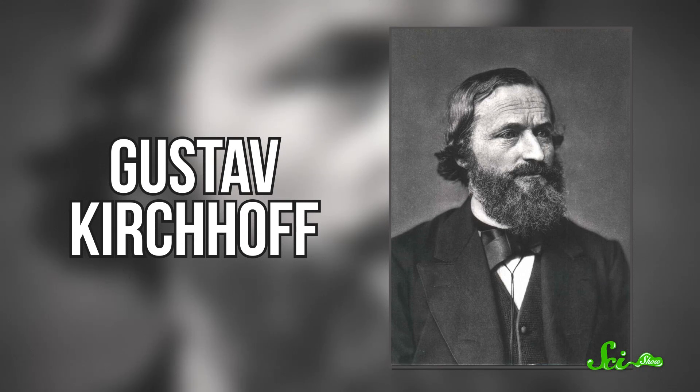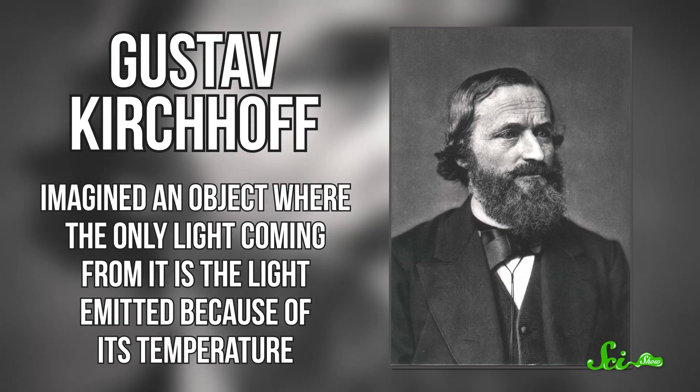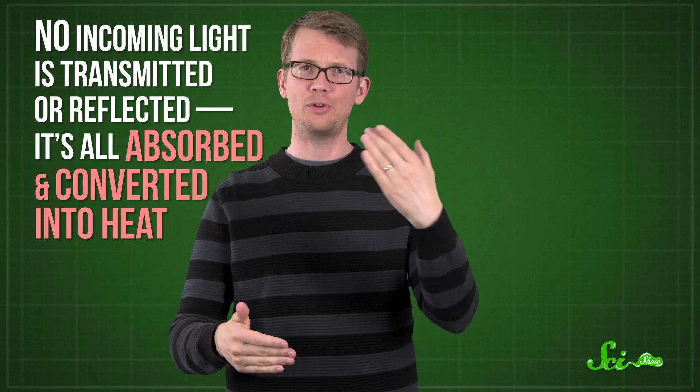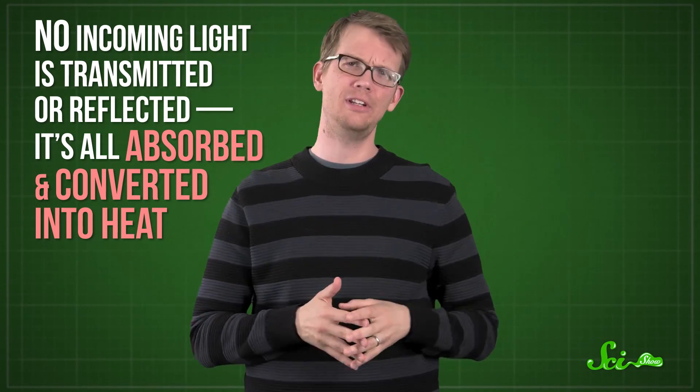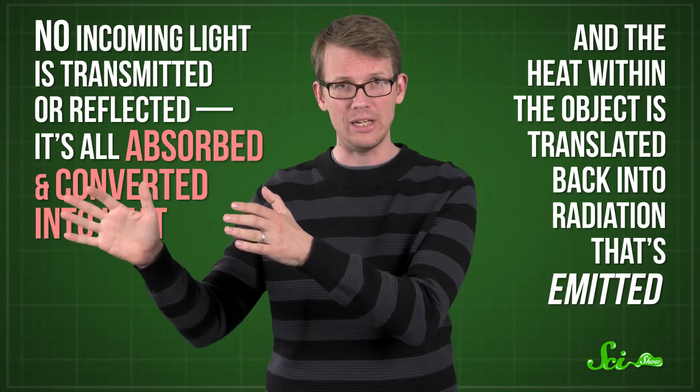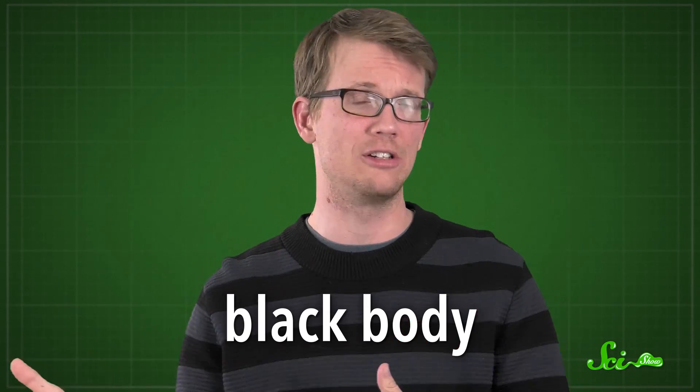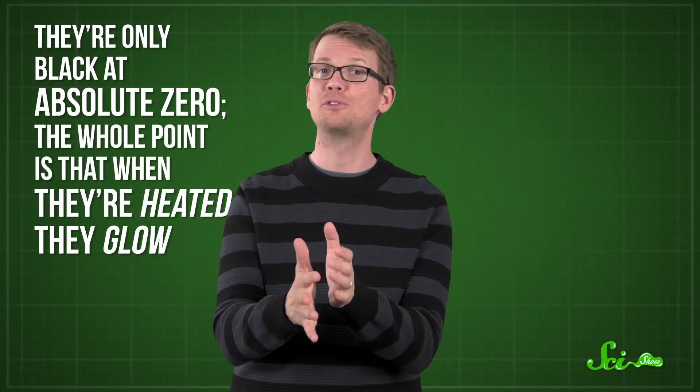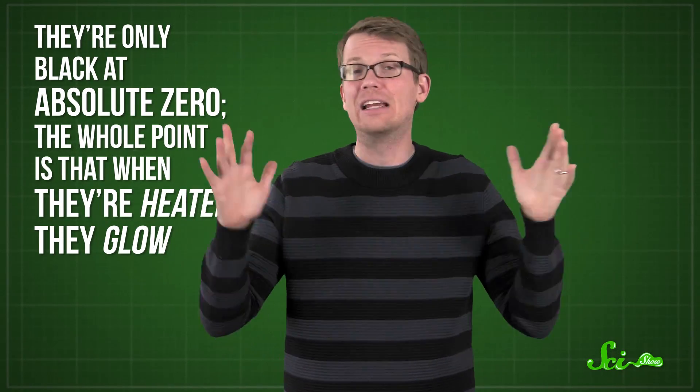So in 1860, a German physicist named Gustav Kirchhoff came up with the spherical cow of radiation — the simplest possible case. He imagined an object where the only light coming from it is the light emitted because of its temperature. In other words, it's a perfect emitter. No incoming light is transmitted or reflected. It's all absorbed and converted into heat. And the heat within the object is translated back into radiation that's emitted. Kirchhoff called this imaginary object a black body, since it doesn't reflect or transmit any light. Ironically, black bodies are terrible at being black — they're only black at absolute zero. The whole point is that when they're heated, they glow.